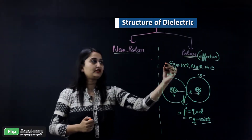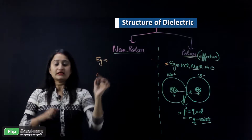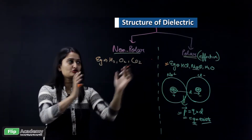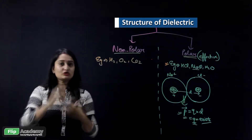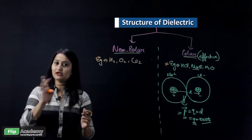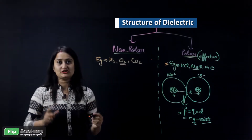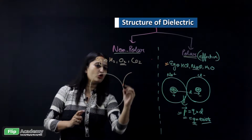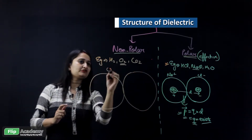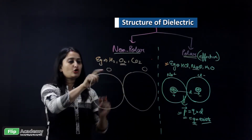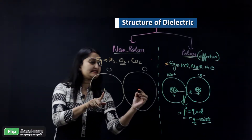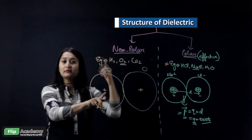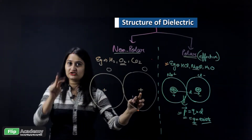Now let's move to non-polar dielectrics. Examples include hydrogen, oxygen, and carbon dioxide. These molecules are arranged so that their structure places them in the non-polar category. Taking oxygen (O₂) as an example: it is formed by two oxygen atoms, each with a positively charged nucleus. We need to find the center of mass of these two positively charged atoms.